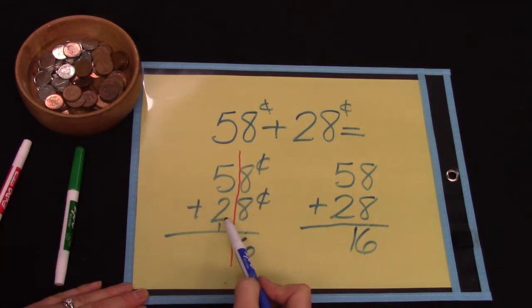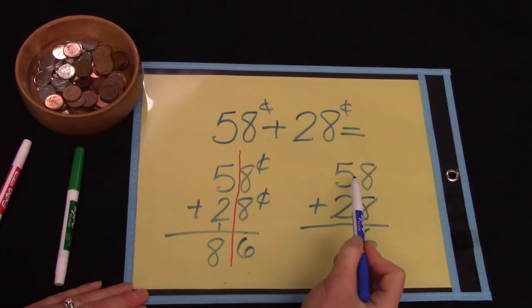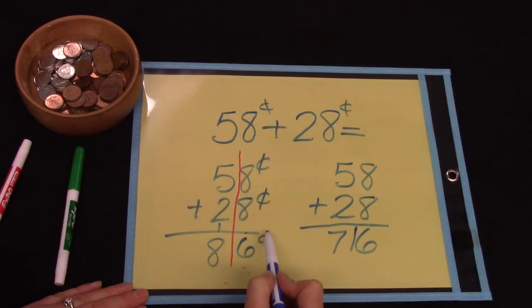Well let's try it. And here we have 5 plus 2. That's 7 plus 1 more, 8. 86 cents. 5 plus 2 is 7. Which one makes more sense? 86 cents or 716 cents?